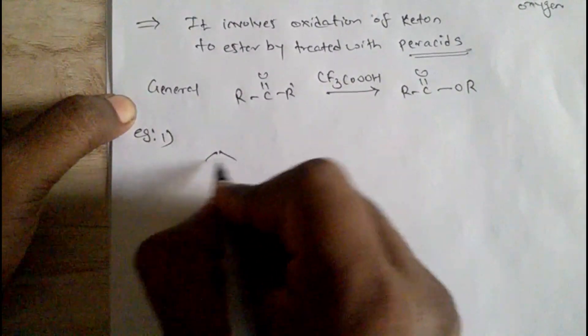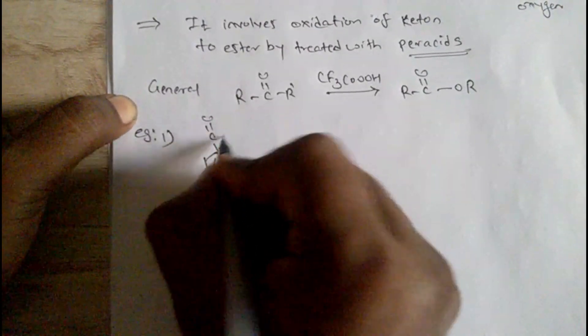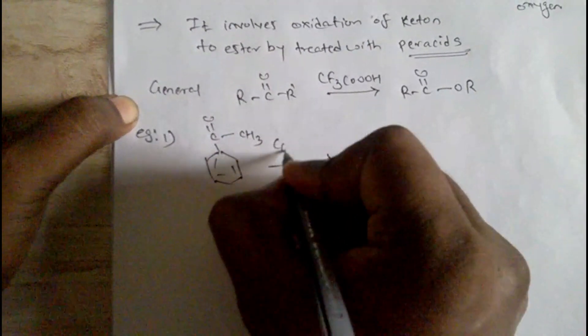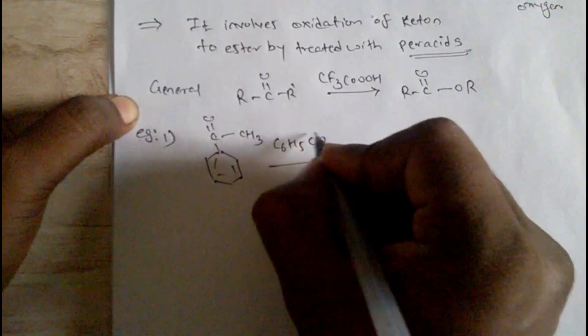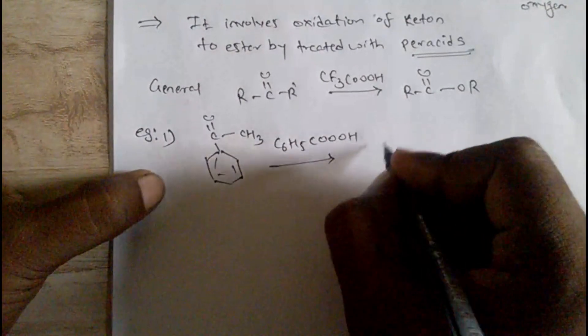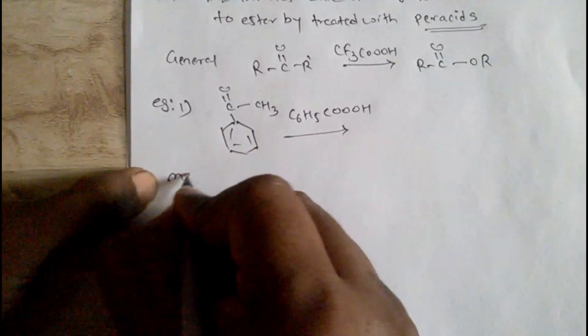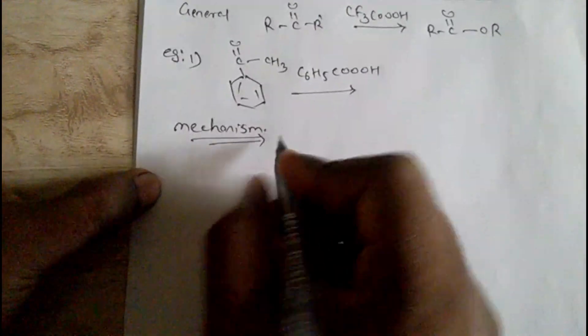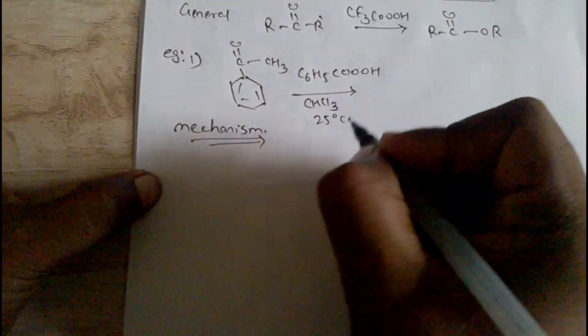Let's take one example. This is treated with C6H5COOOH benzoic peracid and let's see what product we get. The mechanism in presence of CCl3 at 25 degrees Celsius.